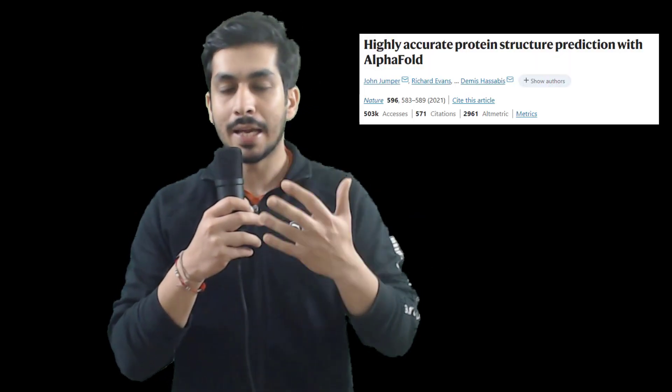Now, one of the biggest breakthroughs of last year, many of you might already know about it was AlphaFold, which is basically an AI algorithm, which was developed by DeepMind, which is a company, which is a subsidiary of Google. Okay. So basically Google is everywhere.